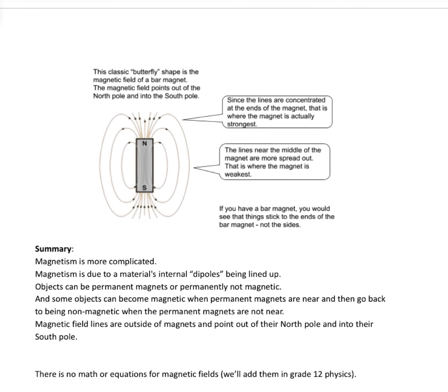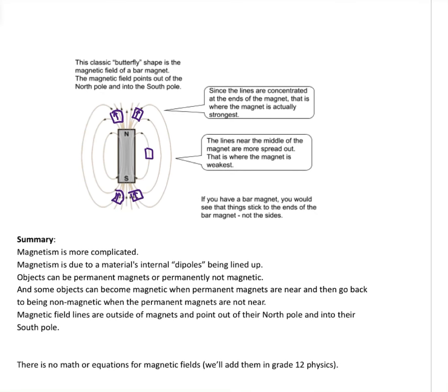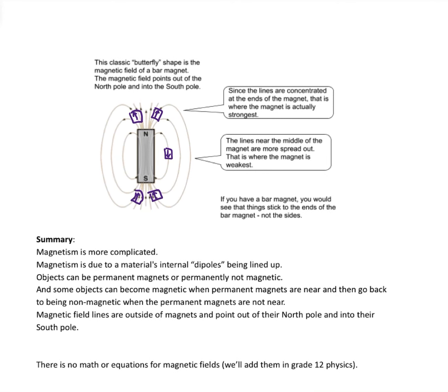Here is a diagram to show it. So imagine putting a little compass over here somewhere. If you put it there, the north pole would point away from that north pole. If you put that compass over here, the north pole would point away from that one. If you put it down here somewhere, the north pole would attract to the south and point that way. Put it over here, the north pole would attract and point that way. If you put it beside it for some reason, it would point, in this case, straight down. This classic butterfly shape...